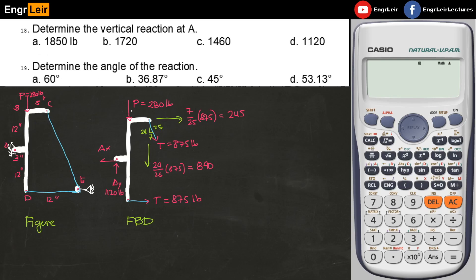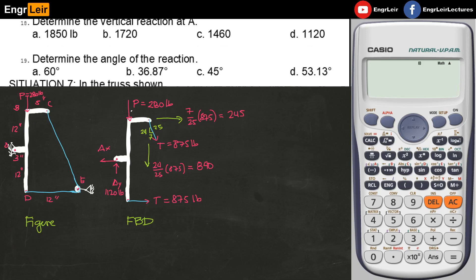This is our answer for number 18. For the last problem, number 19 for situation 6: Determine the angle of the reaction. I just assume it's referring to the reaction at A. So the reaction at A must be somewhat like this. It's the resultant of A Y and A X.